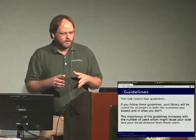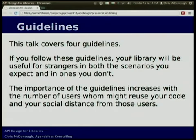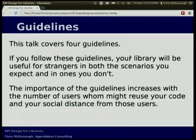The things I'd like you to take away from this talk are four guidelines — things I think are important, bred from annoyance at my own code and other people's code. If you follow these guidelines, hopefully your code will be useful to strangers — not just people who sit next to you or talk to you on IRC — people who do not know you, don't know your name, don't care who you are. The importance of these guidelines increases with the social distance you have from those people.